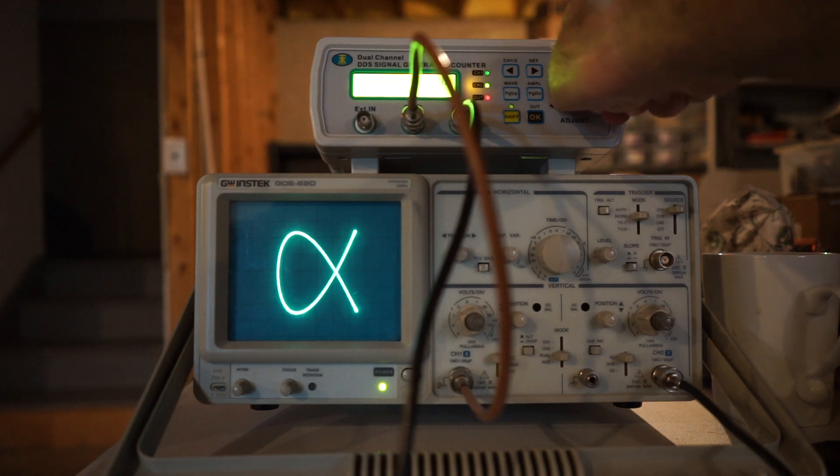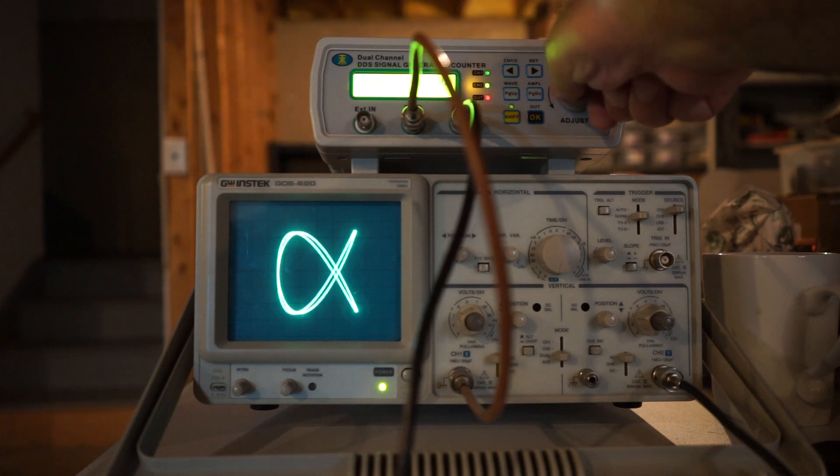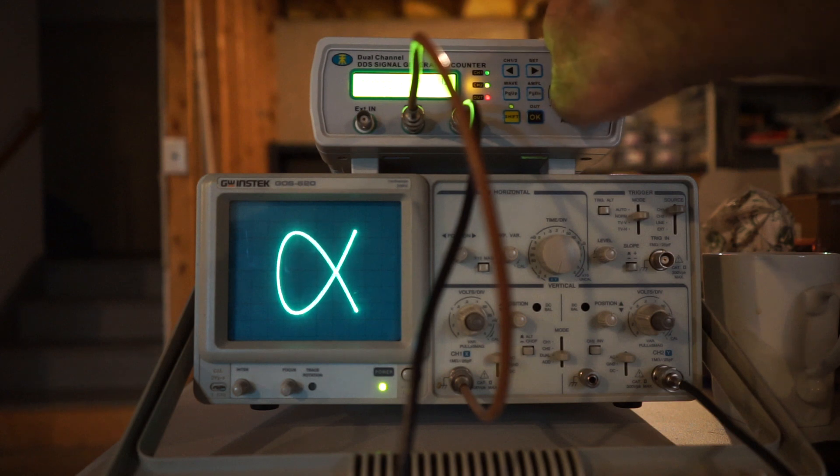So here's where you get the perceptual shift, where the lines align. And that's where the apparent direction of rotation seems to shift. So you can kind of see it go back and forth there.